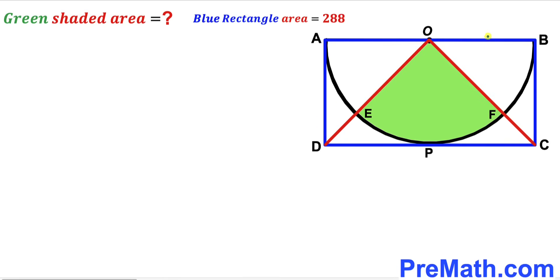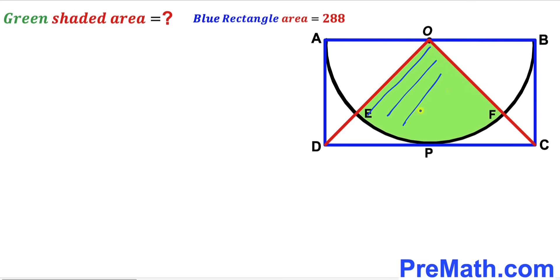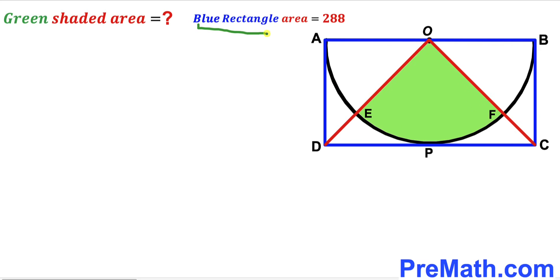Welcome to Premath. In this video we have a semicircle with center O fully inscribed in a blue rectangle ABCD, such that point P is the point of tangency. We also have segments OD and OC, resulting in a green shaded region. The area of the blue rectangle is given as 288 square units, and our task is to calculate the area of the green shaded region.